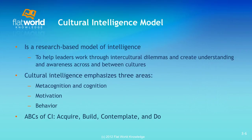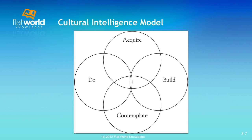There are some ABCs of cultural intelligence — which should really be the ABCDs. The acronym is: Acquire, Build, Contemplate, and Do. This is what the model looks like. The point is just to show that it's an interconnected system — you acquire intelligence, build on your skill sets, contemplate, and then do. This is the flow of the proposed cultural intelligence model.